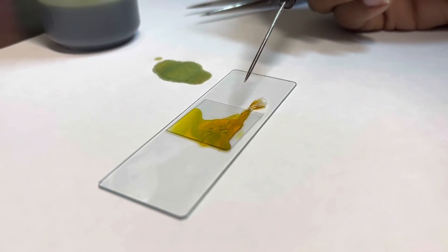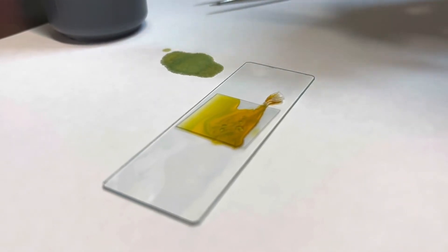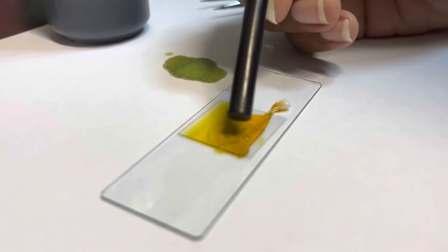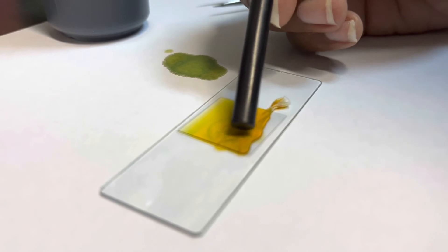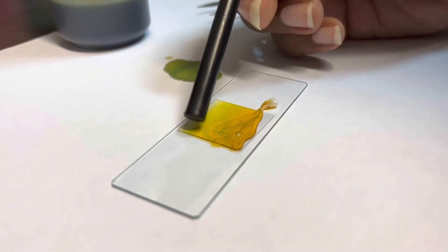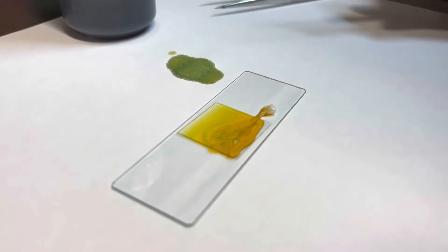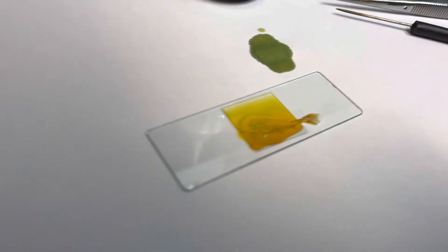You will see the stain spread. In the event that there are any trapped air bubbles, use the back of the mounting needle and gently tap such that the air bubbles shift to the side. And that's how you prepare a slide.